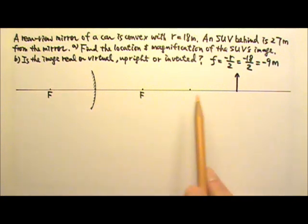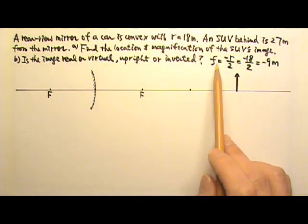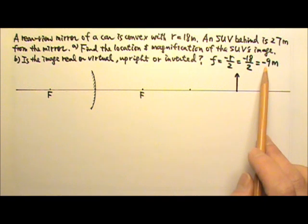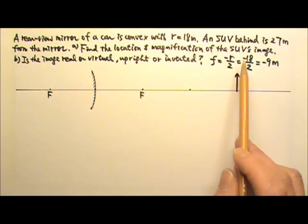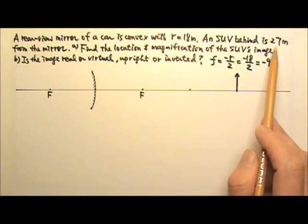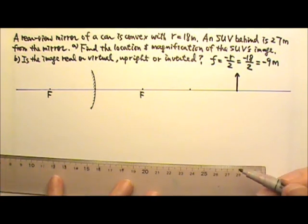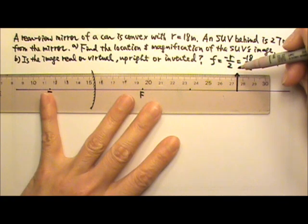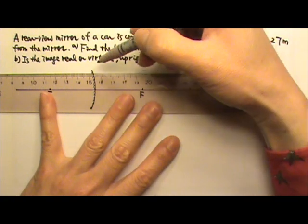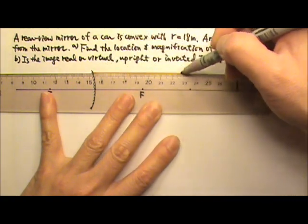I'm going to use ray tracing to find the image of the SUV. The focal length is negative 9 meters, so here's the focal point. Since this SUV is 27 meters away, that's three times the focal length away. For ray tracing, I have to draw two rays. I'm going to start with the ray that is parallel to the principal axis — the paraxial ray.